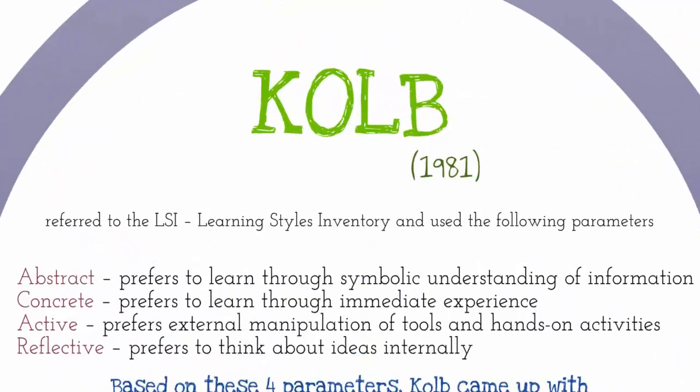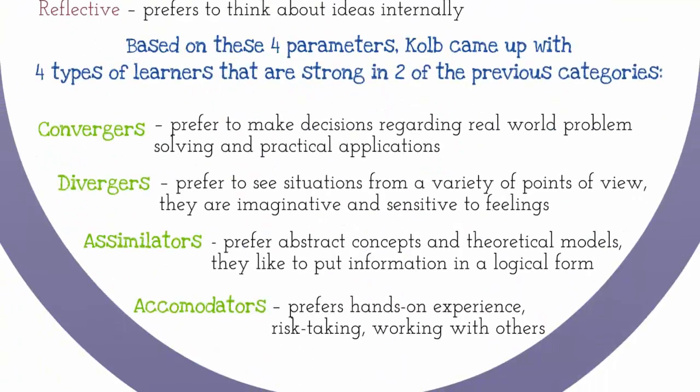Kolb also had a model called the Learning Styles Inventory, using the following parameters: we think either abstract, concrete, active, or reflective. The abstract person prefers to learn through symbolic understanding, whereas the concrete needs an immediate experience. The active person likes external manipulation of tools and hands-on activities in labs. The reflective person prefers to think about ideas internally. Based on those four parameters, Kolb came up with four learner types strong in two categories: convergers prefer real-world problem solving; divergers like to see situations from multiple viewpoints and are imaginative; assimilators prefer abstract concepts and logical formats; and accommodators are risk takers who like working with others.